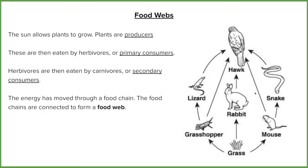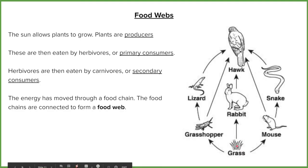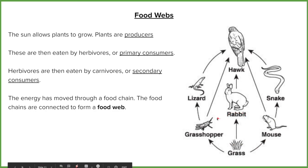Grass is eaten by the primary consumers, which are the herbivores — the grasshopper and the mouse. The secondary consumers are carnivores that eat the primary consumers: the lizard eats the grasshopper, the mouse is eaten by the snake, or the rabbit is eaten by the hawk. Energy moves in the direction of the arrow — starting with grass, moving into the grasshopper, mouse, and rabbit — all the way up to the hawk, which is at the top of our food web.